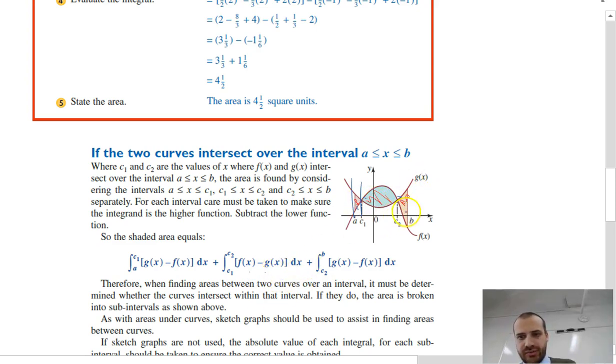And then, if we want to find this last bit, we go between b and c2, g of x, which is the top function, minus f of x, which is the bottom function. Then we add them all together.